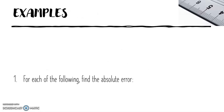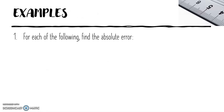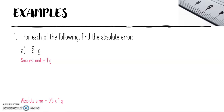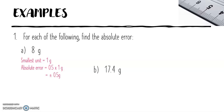Let's look at some examples. For each of the following, find the absolute error. A: 8 grammes. The smallest unit here is 1 gramme, so the absolute error is 0.5 times 1 gramme, which equals plus or minus 0.5 grammes.